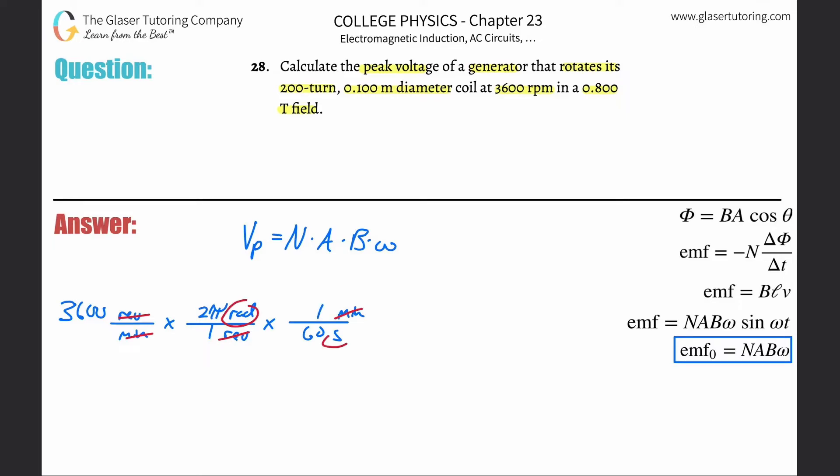Now what's left is radians per second. All we have to do is calculate: 3600 times 2 times π, divided by 60. This comes out to about 376.9, or 377 radians per second. Now we have omega in the right unit.